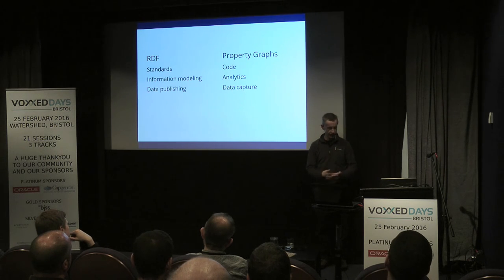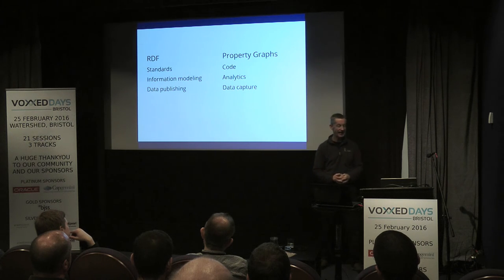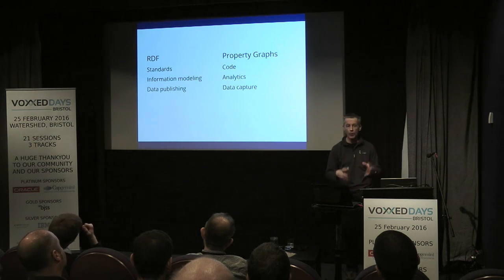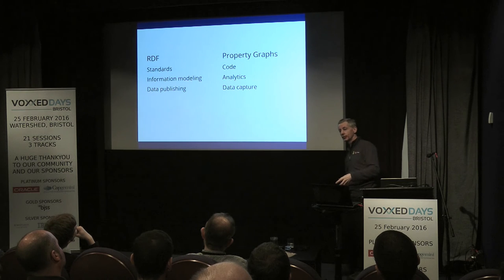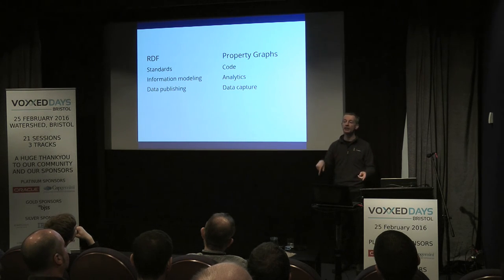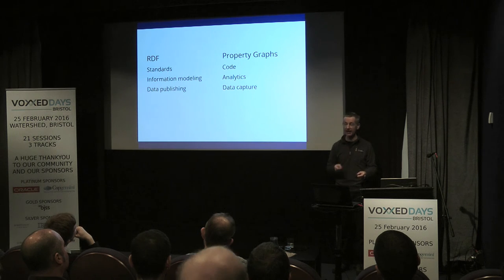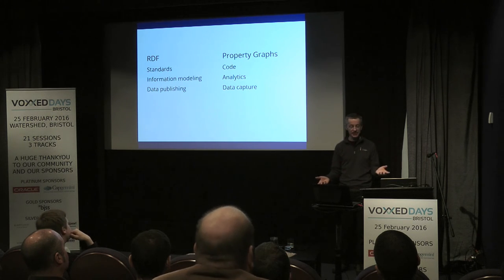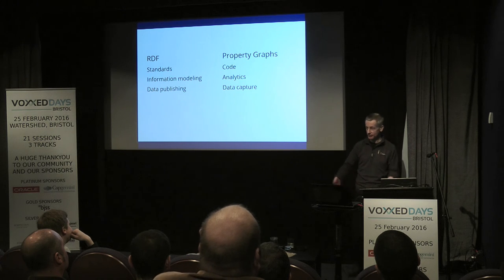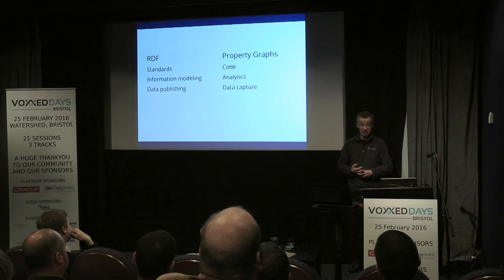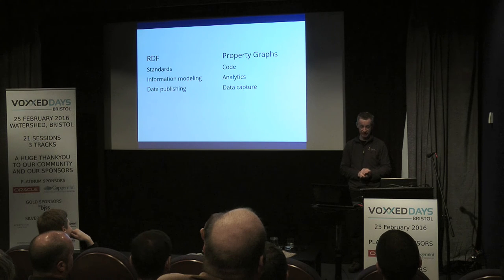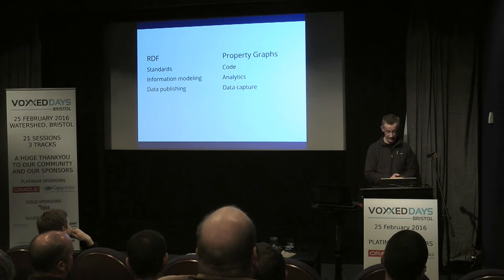RDF is about information modeling and information exchange, while property graphs are much more about analytics — using the data within a given collection, less about linking it together. For example, vertices have unique numbers in property graphs, so to combine two datasets you have to ensure those numbers don't clash. Since numbers tend to start at one in both datasets, you can't just concatenate them — you need to do some work to keep them apart, because loading the same data in a different order could give different numbers.